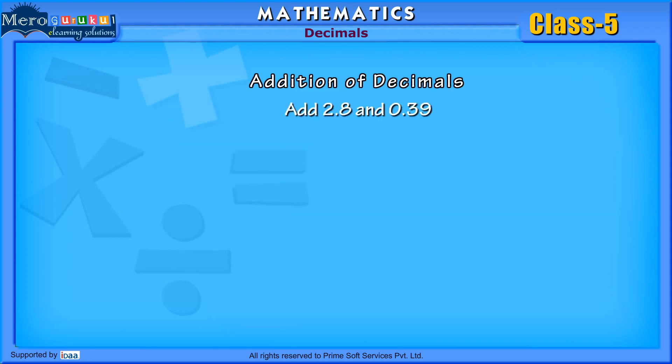Example 3: Add 2.8 and 0.39. Solution: We write the given decimals one below the other, keeping the decimal points aligned.